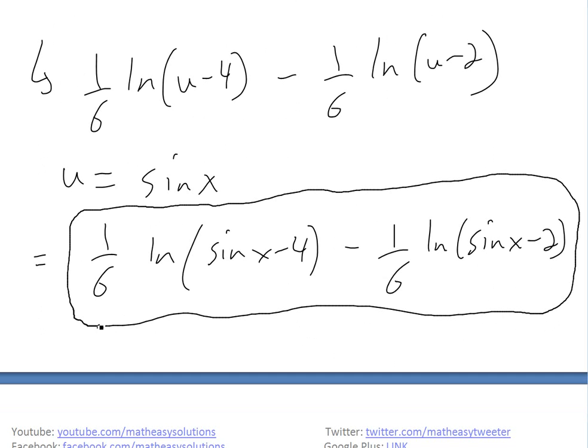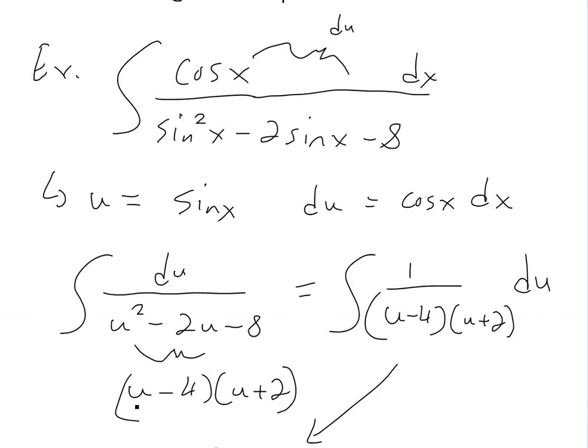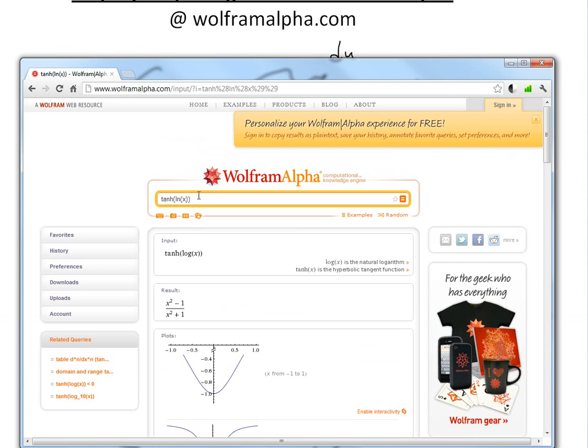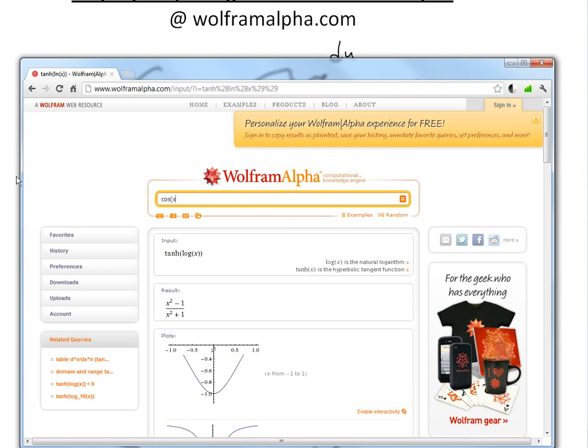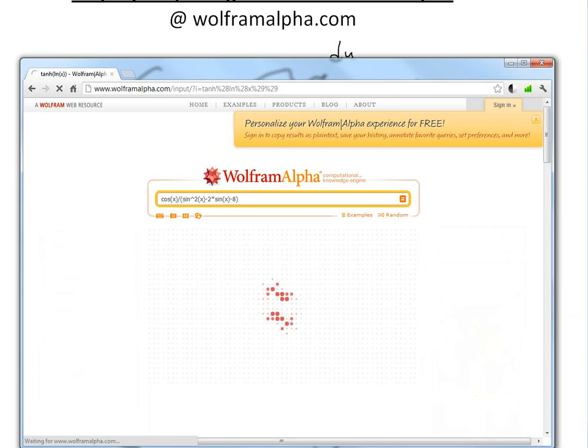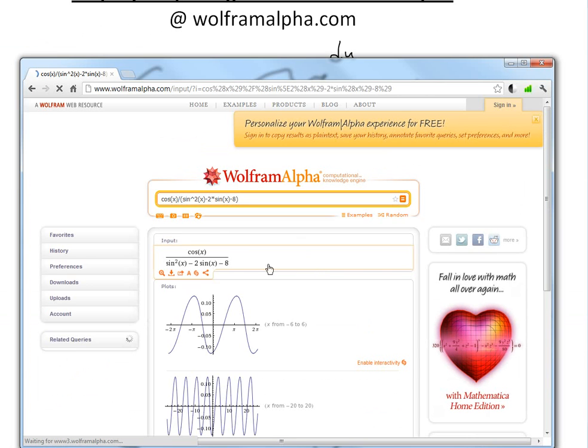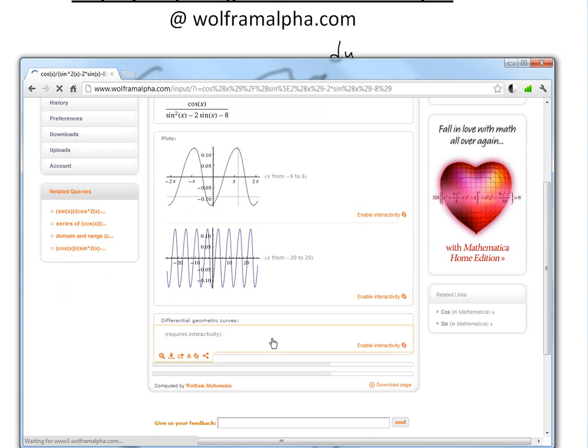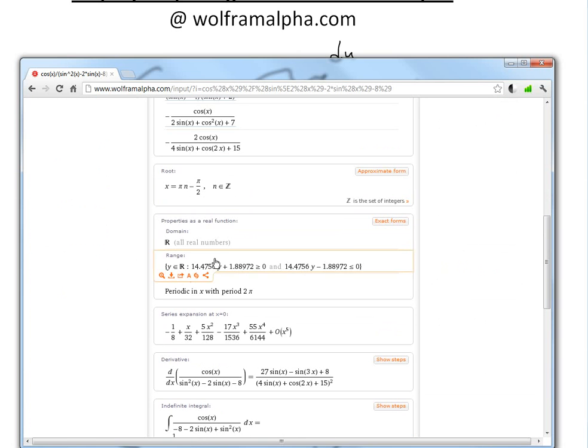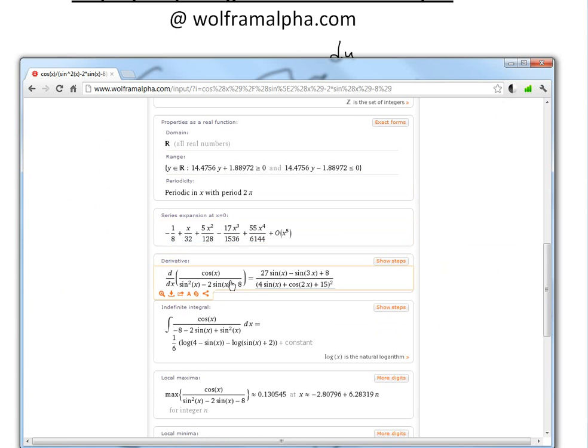And you'd be surprised, Wolfram Alpha would do the same thing here. We're just going to plug this one into Wolfram. Let's just type it in. This is pretty amazing. Cosine of x divided by sine squared of x minus 2 times sine of x minus 8, all bracket. So there's the input, there's the graph, this is a bigger scale graph, different forms, the roots, and let's go to the derivative.